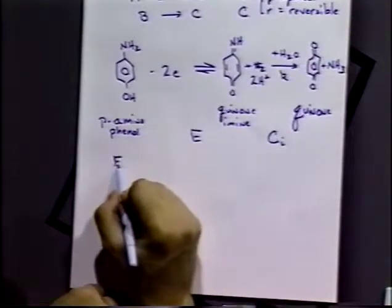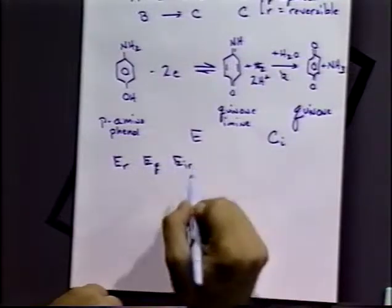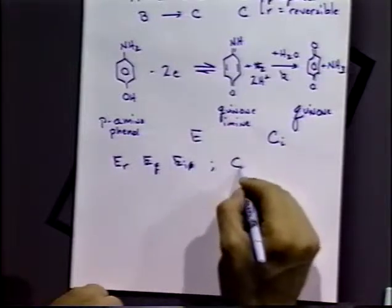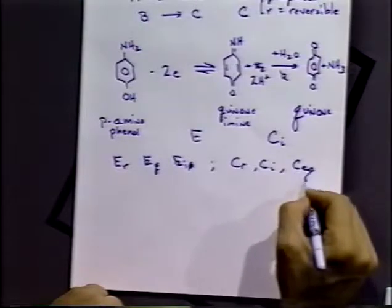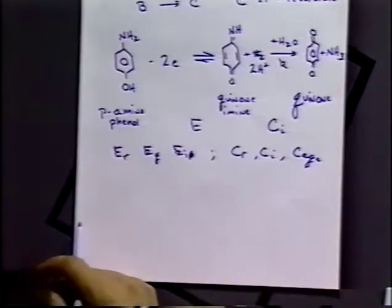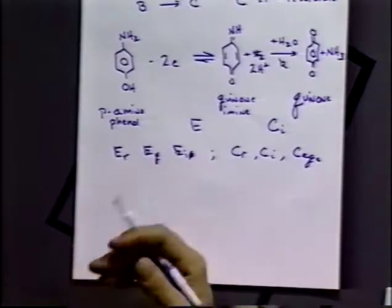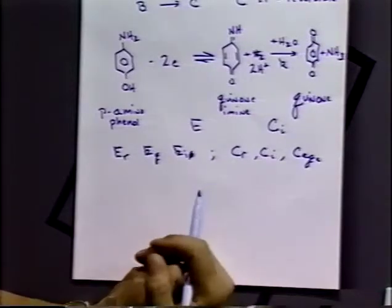So we might call this C sub i to indicate irreversibility. We'll have subscripts E sub r, E sub q, E sub i, and we can have C sub r, C sub i, and sometimes C sub eq. We use A and B to indicate electron transfer susceptible species — in other words, species that can undergo electron transfers — and we'll use W, X, Y, and Z to indicate non-electroactive species in the system. Let's talk about some different types.